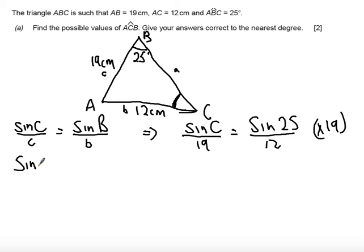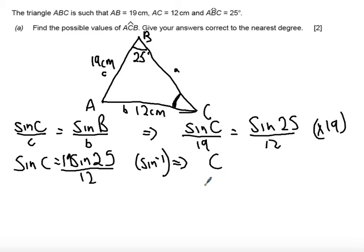So I get sine of C equals sine 25 and so it's multiplied by 19 so 19 sine 25 all over 12. And then I'm going to take inverse sine of both sides so that we get the angle C.